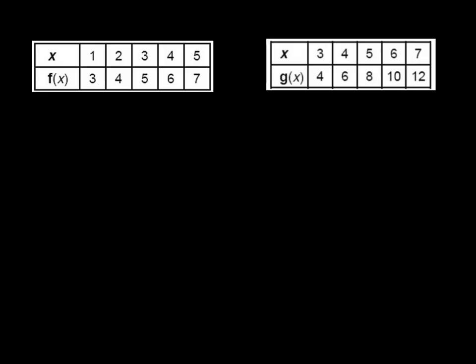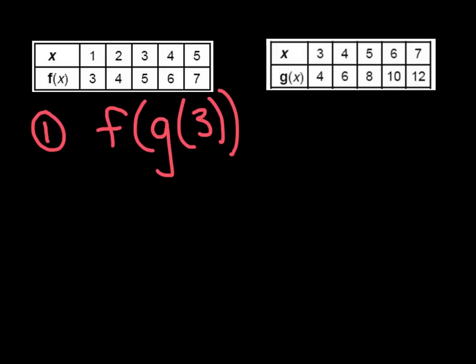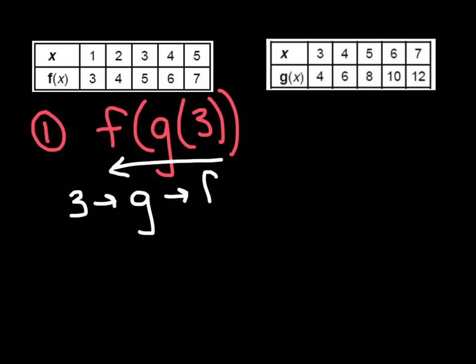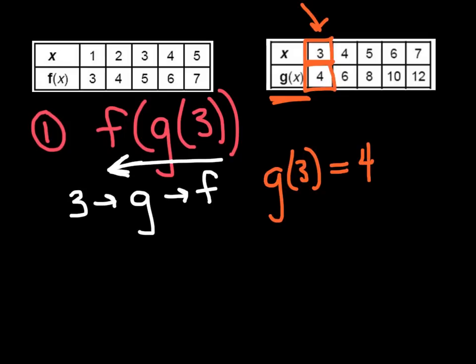Now we can get more creative in the ways we ask it. Instead of giving two functions written out, we can give you the two functions in tables. Take a moment, pause, and copy down these two tables. Now that you're back, notice this is function f and this is function g. Let's find f of g of 3. It works the same way — I'm working backwards: I see 3 first, then g, so 3 goes into g and that output goes into f. I need to evaluate g of 3 — going to the g table, inputting x = 3, I get an output of 4. So g of 3 = 4.